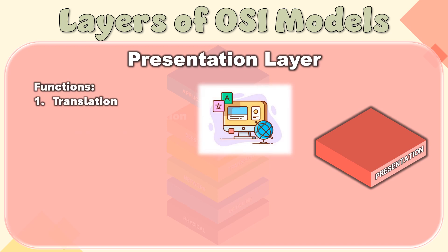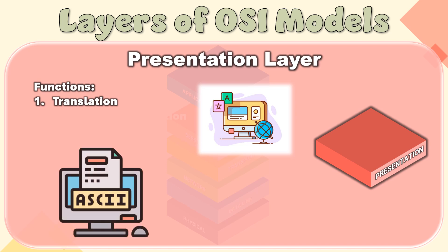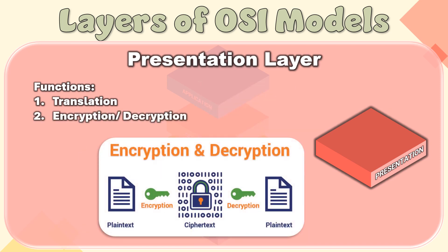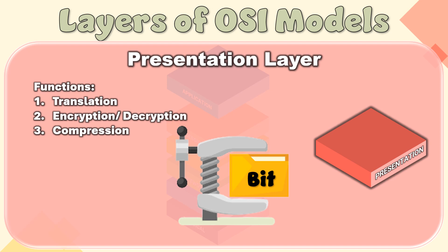Functions of the Presentation Layer. Translation: For example, ASCII to EBCDIC. Encryption/Decryption: Data encryption translates the data into another form or code. The encrypted data is known as the ciphertext and the decrypted data is known as plaintext. A key value is used for encrypting as well as decrypting data. Compression: Reduces the number of bits that need to be transmitted on the network.